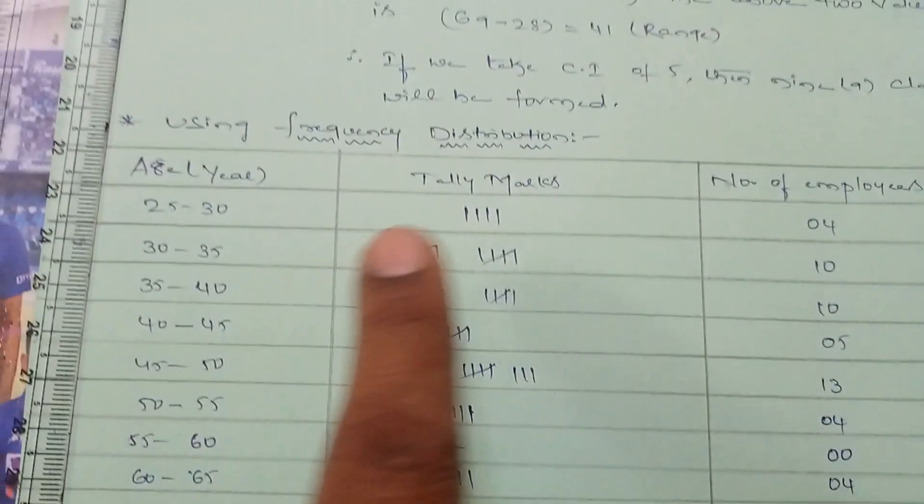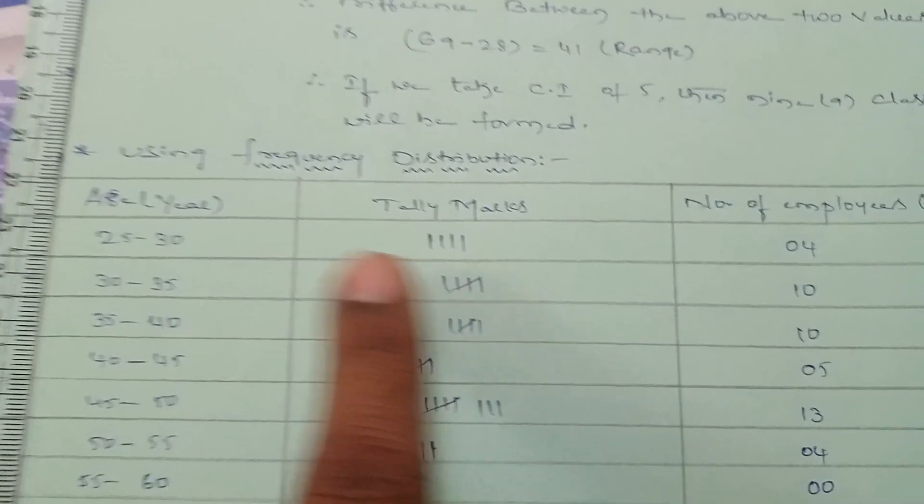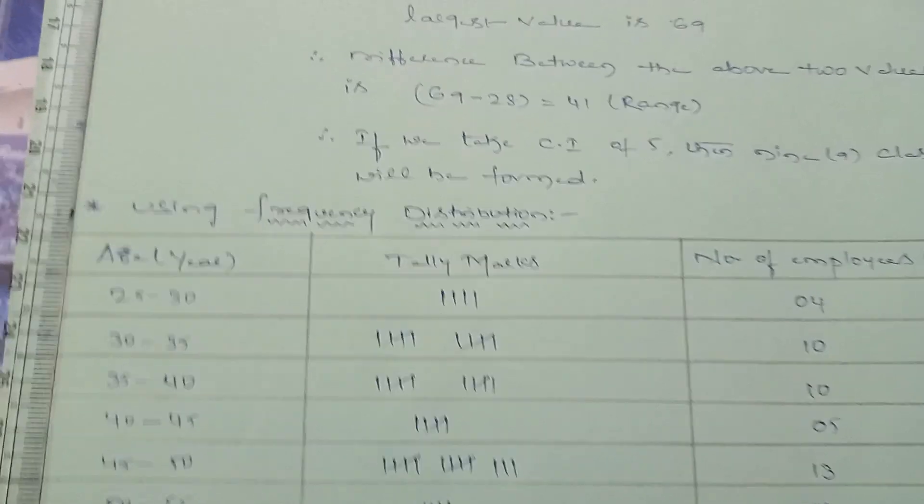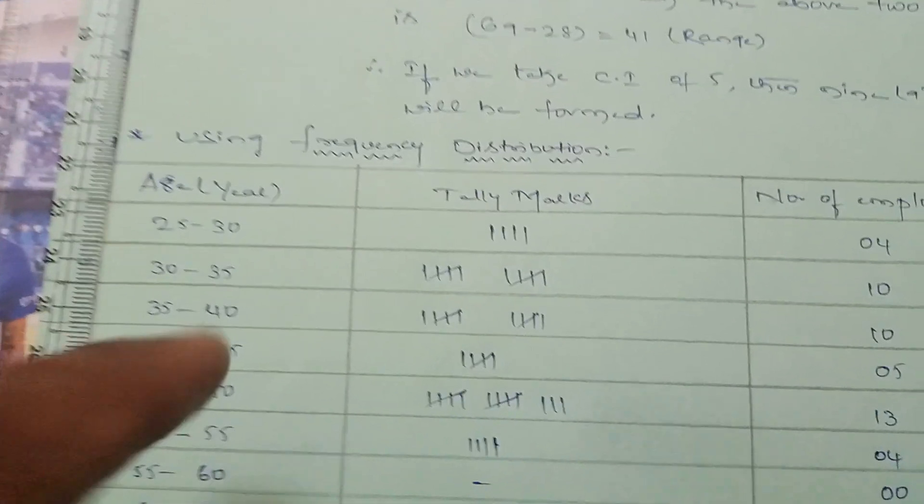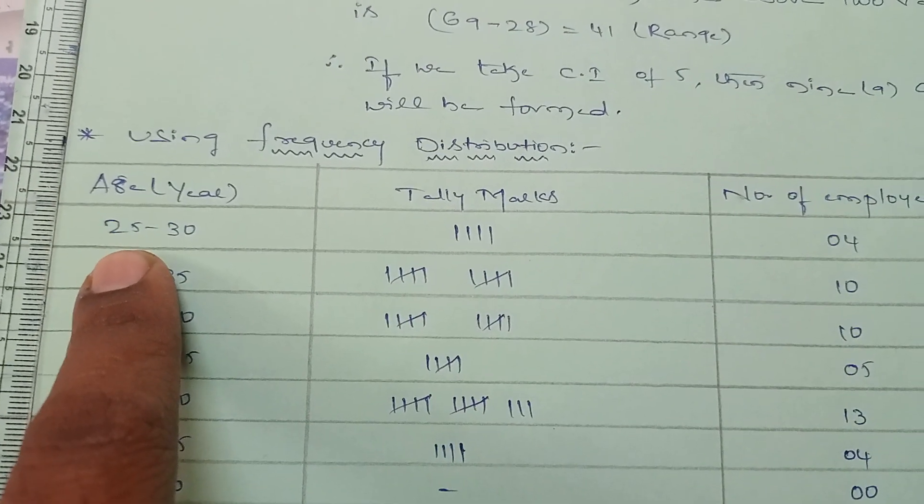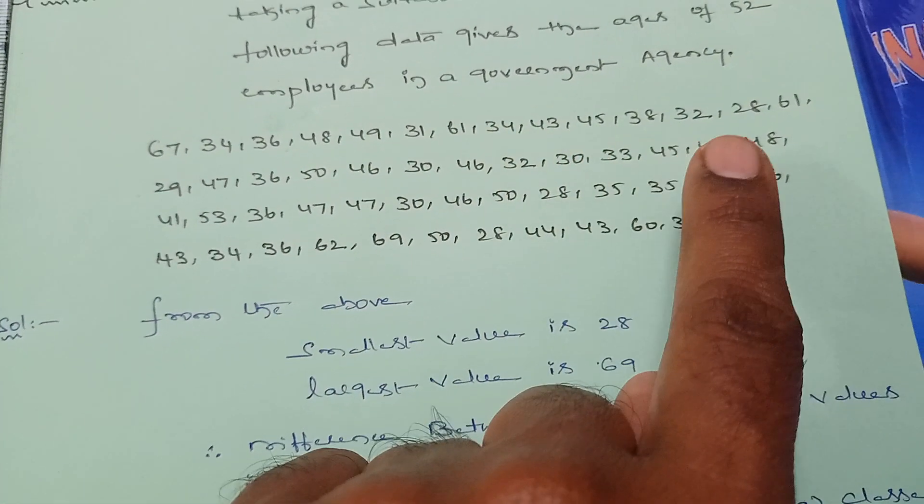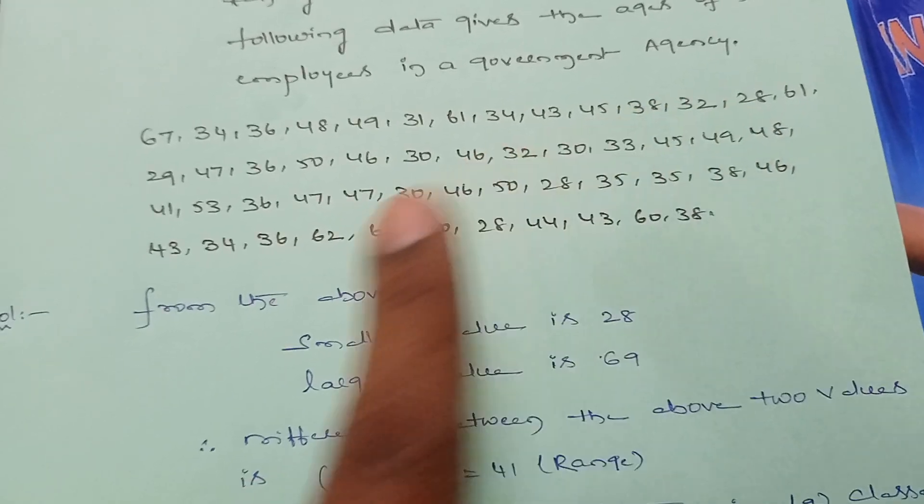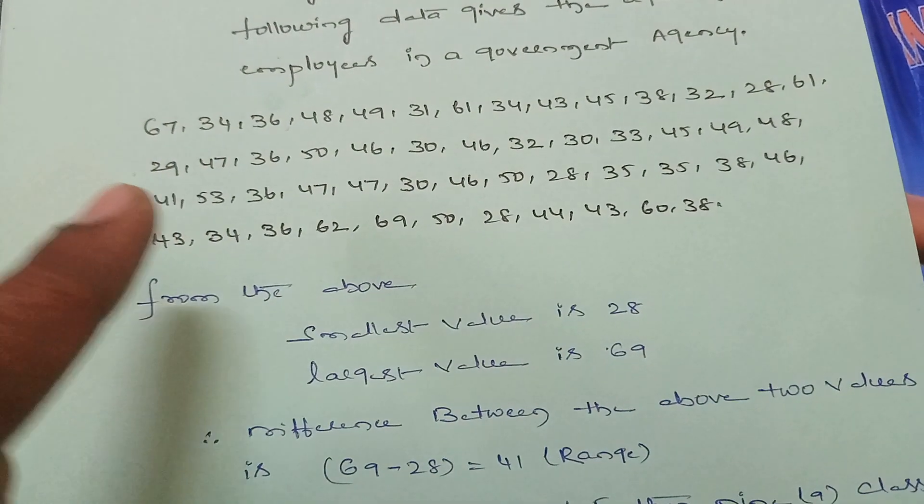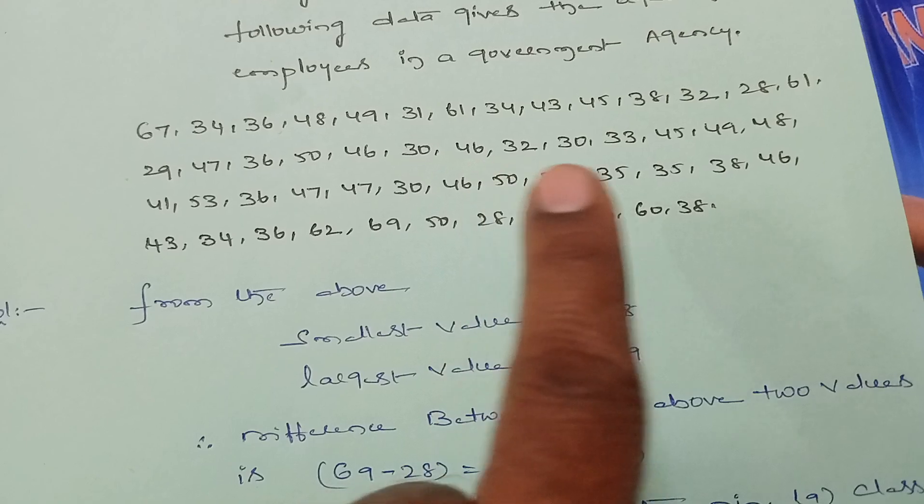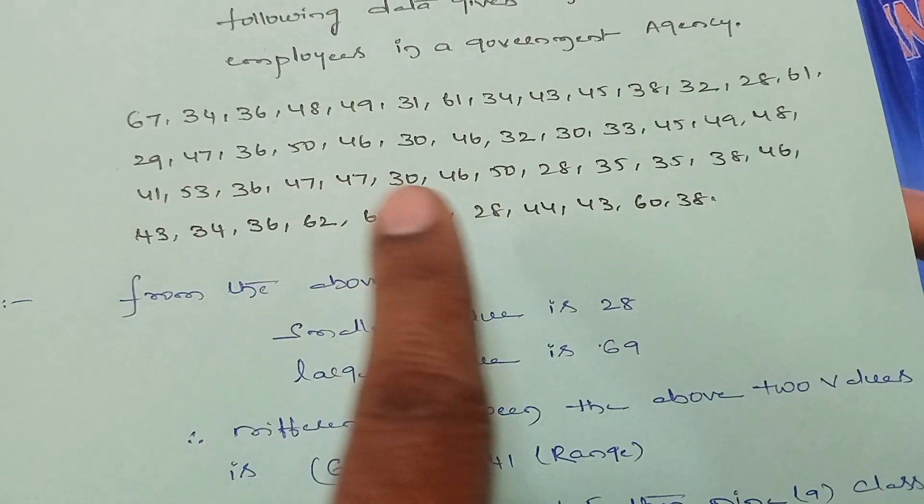How do we make tally marks? You need to note what ages are between 25 to 30. We have 1, 2, 3, 4, 5 observations.